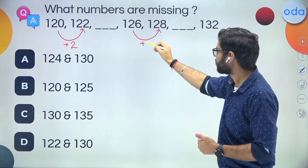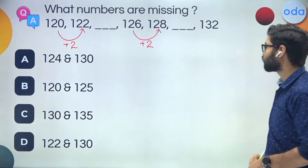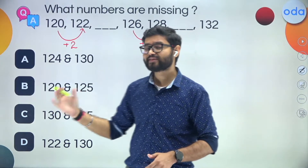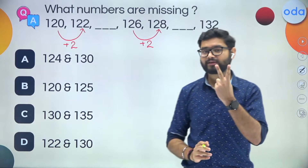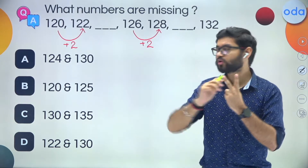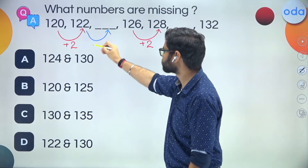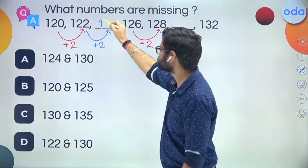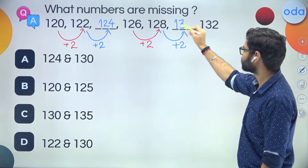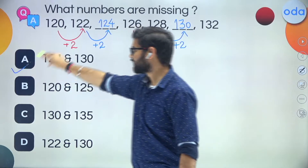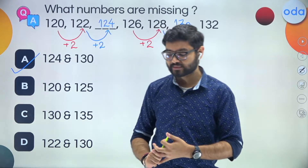If you pay close attention, you will see that I am adding number 2. 120 plus 2 is 122. Let's confirm — 126 plus 2 gives 128, so plus 2 is confirmed. We have identified the rule: we are adding number 2. Now using this rule to solve the question — 128 plus 2 is 130. So option A is the right answer. If you've understood this, give me a thumbs up in the chat box.